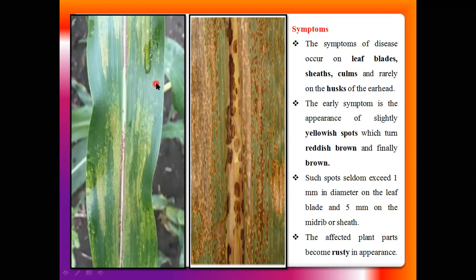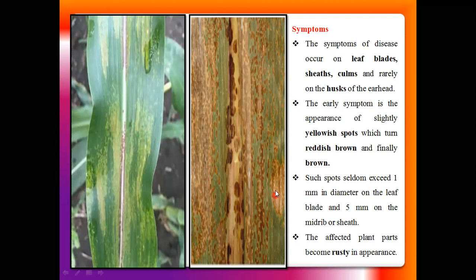These yellowish spots spread to the entire surface of the maize leaf, with a majority portion of the leaf developing yellow spots. Under favorable conditions, these yellow spots turn to reddish-brown and finally brown in color. These brown spots are seen on the leaf surface. The spots are generally 1 mm or may exceed 1 mm in size. The size of the spots on the stem portion and culm portion is larger as compared to the leaf portions.